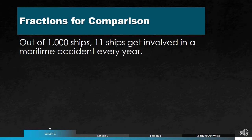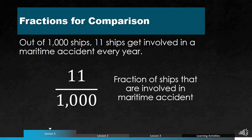Let's have another example. Let's say out of 1,000 ships, 11 ships get involved in a maritime accident every year. If we consider this in terms of a fraction, 1,000 is the total and 11 is the part we are comparing — the ships involved in the maritime accident. So we can write this as 11 over 1,000.